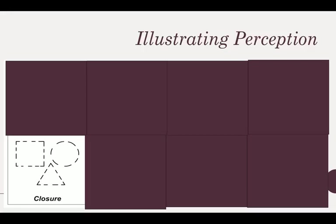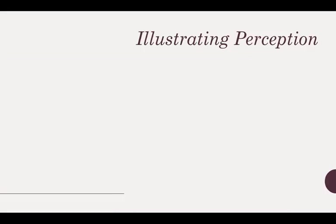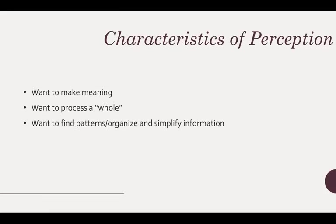Instead of saying these are seven lines arranged next to each other, we want to say this is a whole thing — this is a circle. We want to find patterns in the information we encounter. That simplifies the information to be processed, and we'll talk about why that's important. We want to organize what we see.